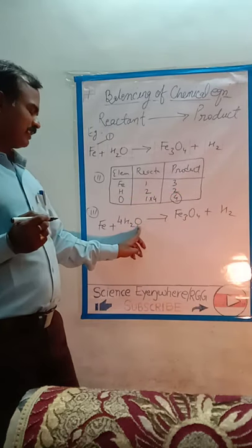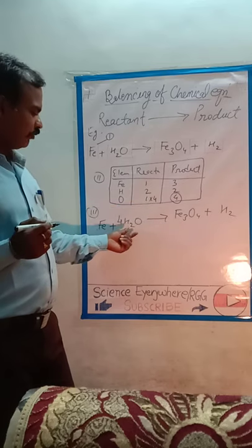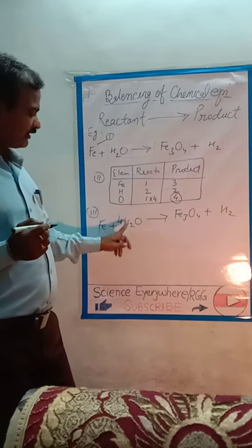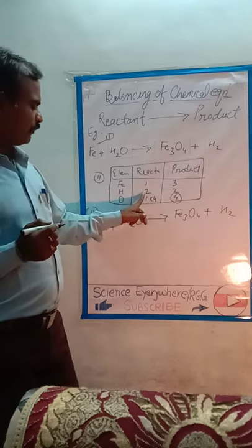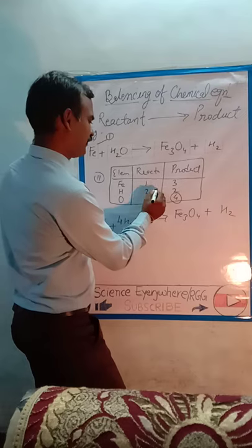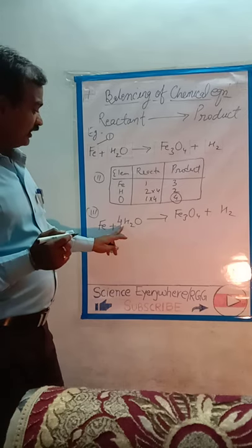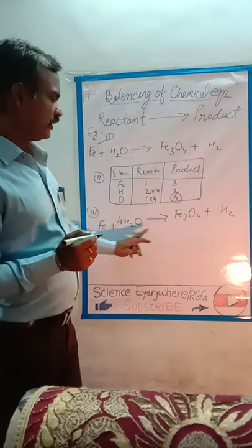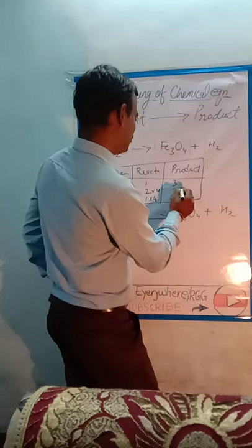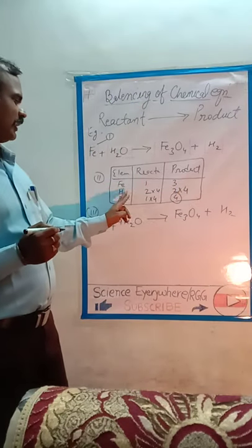When we multiplied four on the reactant side for the water molecule, hydrogen became unbalanced. Earlier hydrogen was two, but after multiplying by four we get eight atoms of hydrogen on the reactant side. On the product side there are only two, so we multiply H₂ by four to get eight — now hydrogen is also balanced.